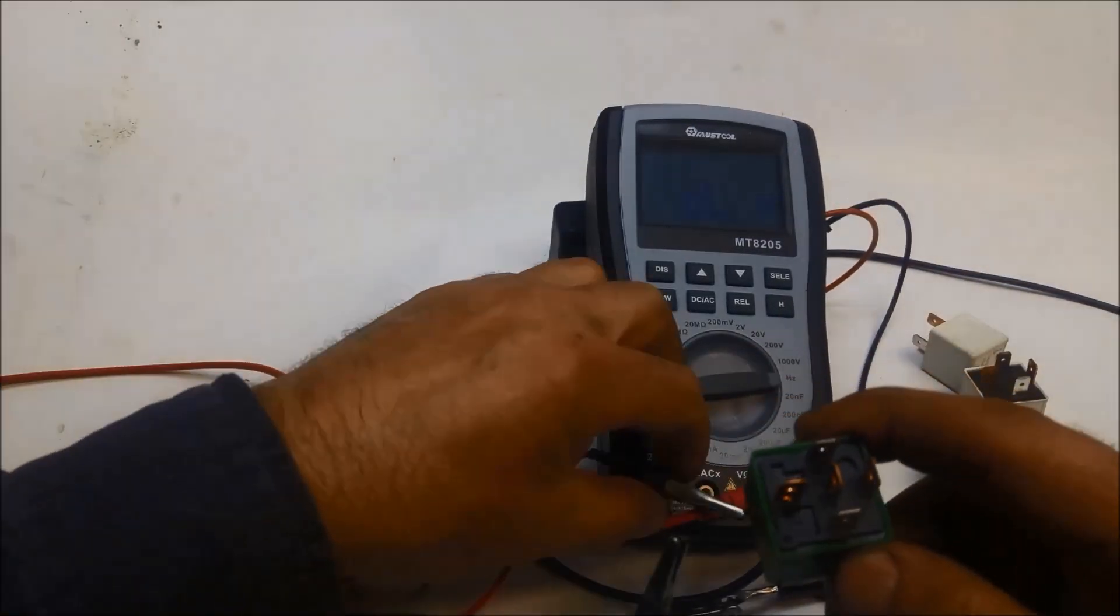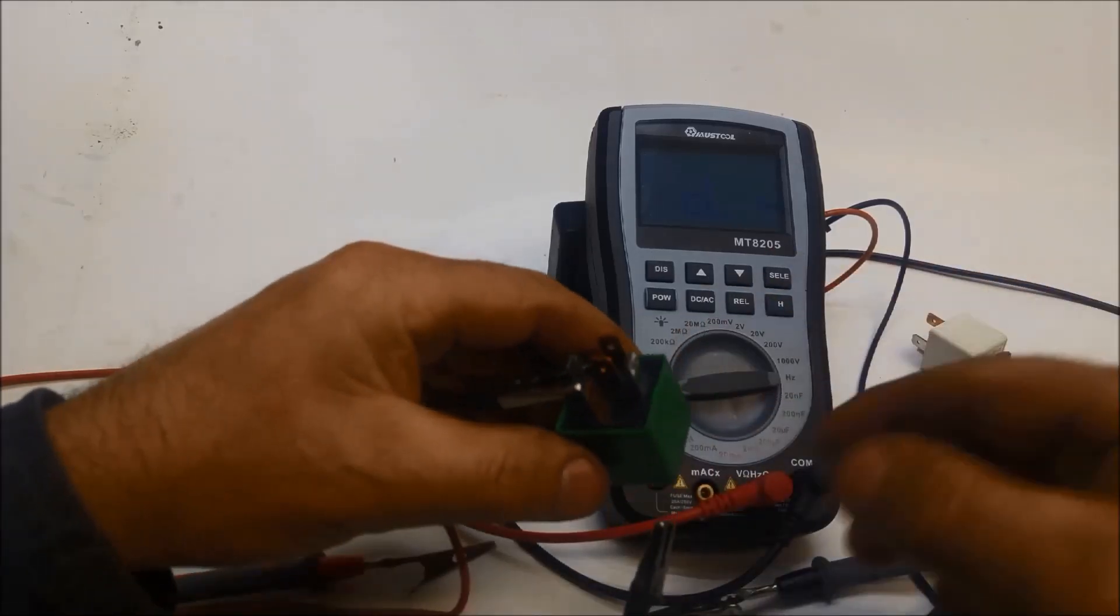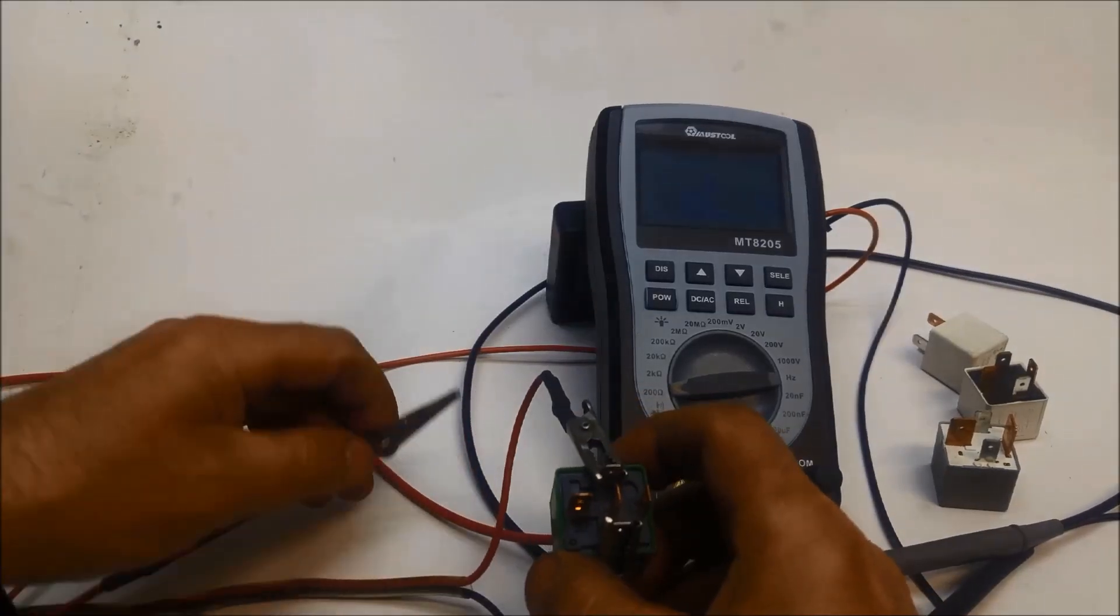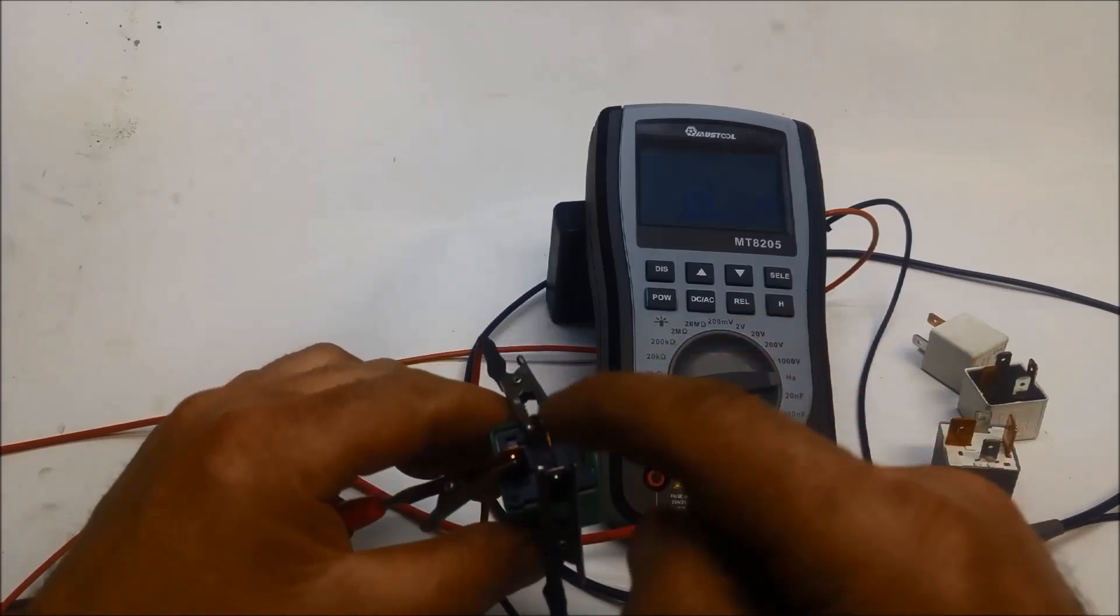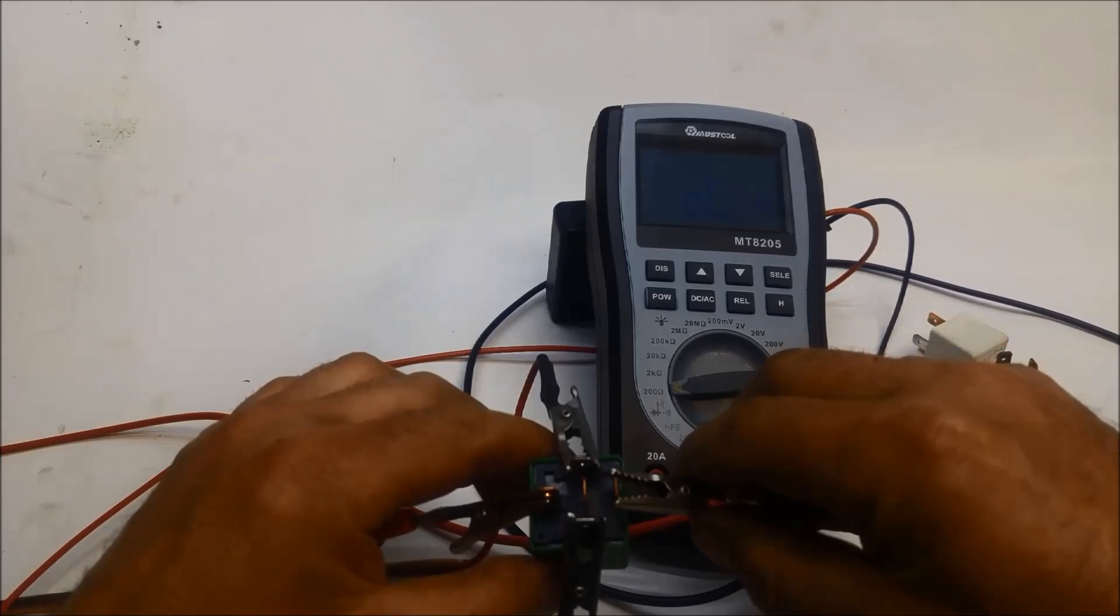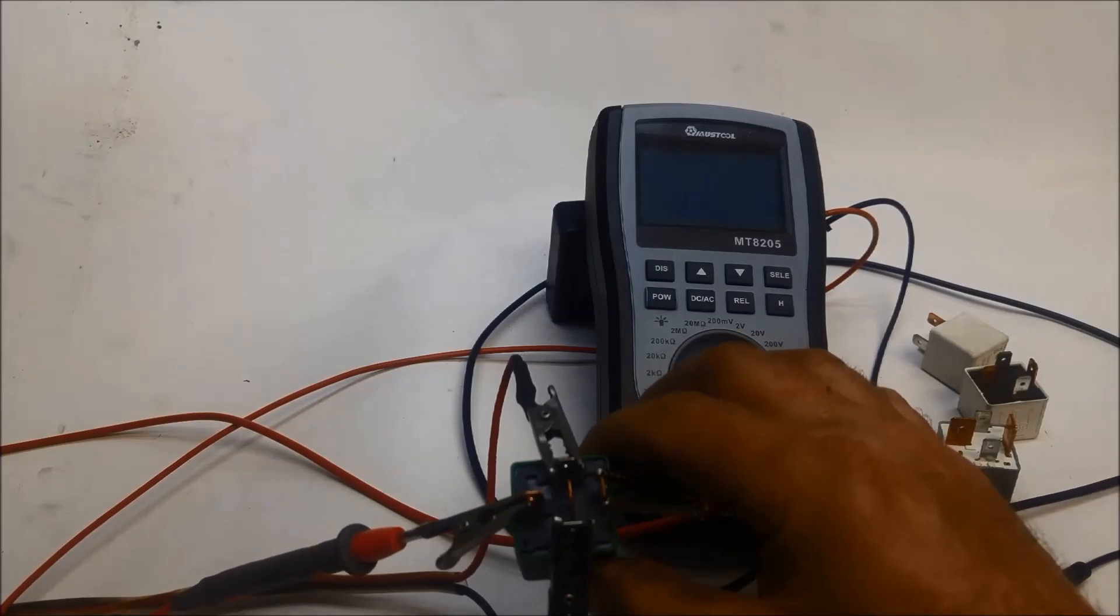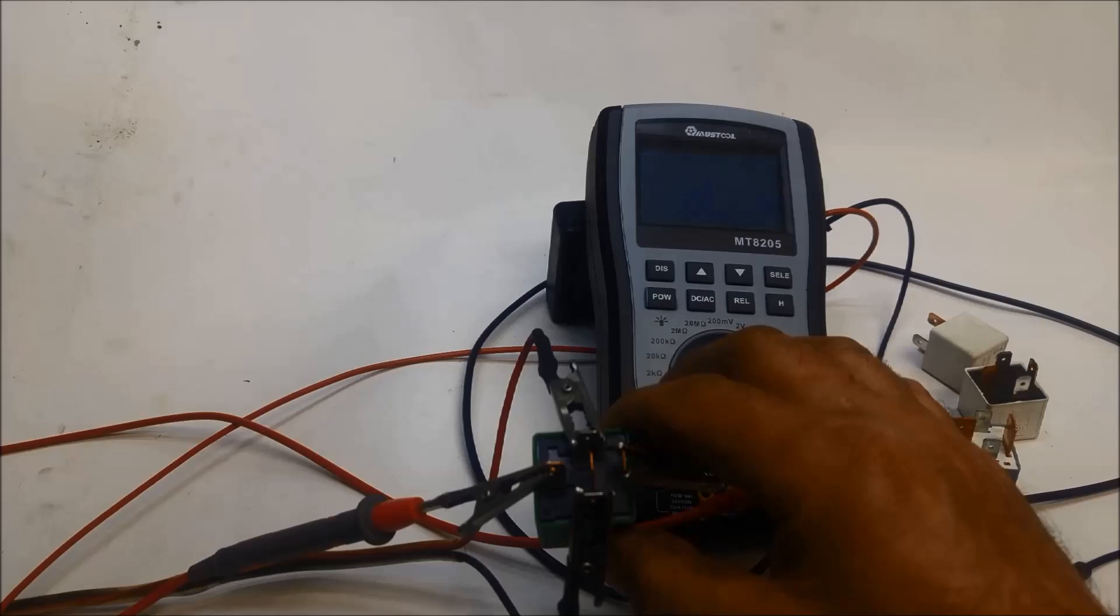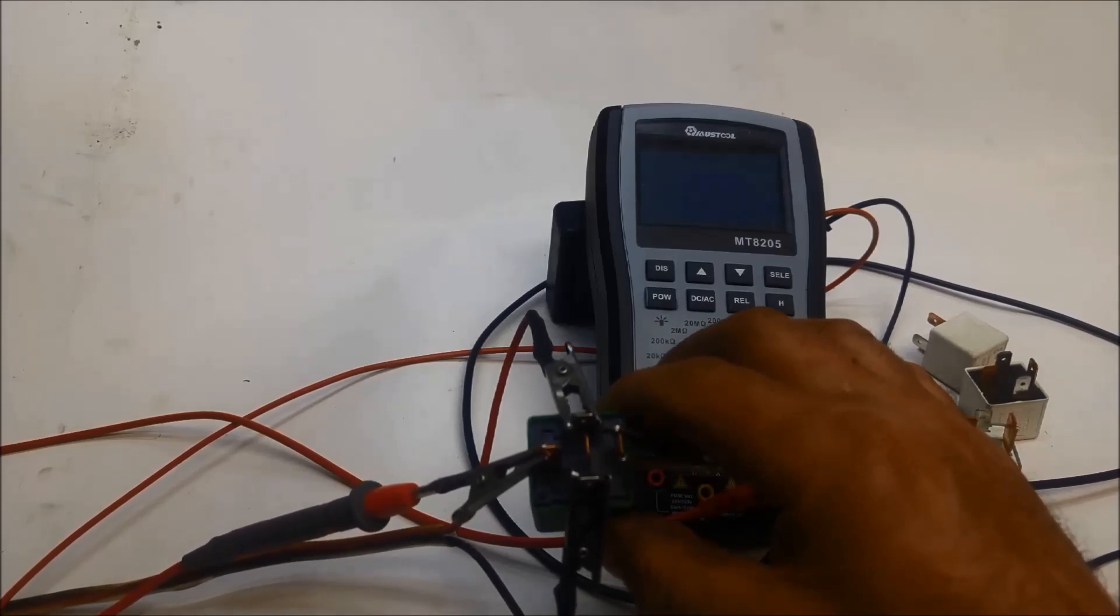Now we'll hook it up the same as what we did. Your power source is on 86, negative on 85. We'll put our multimeter positive on 30 and the other one on 87. Now if we do that, it's exactly the same as the other relay. You can see it's behaving the same way. We've got 0.9 of an ohm resistance.